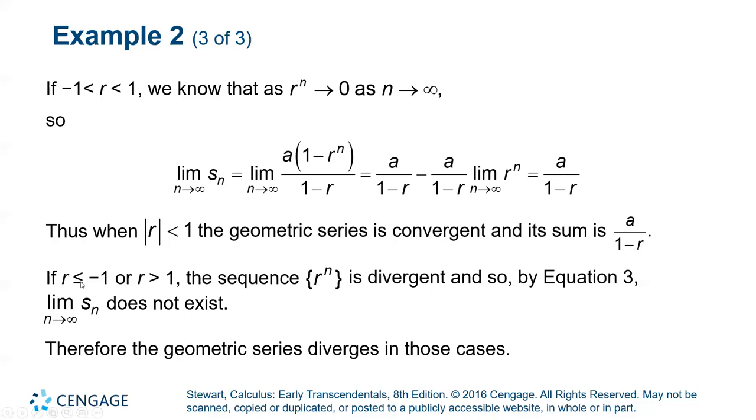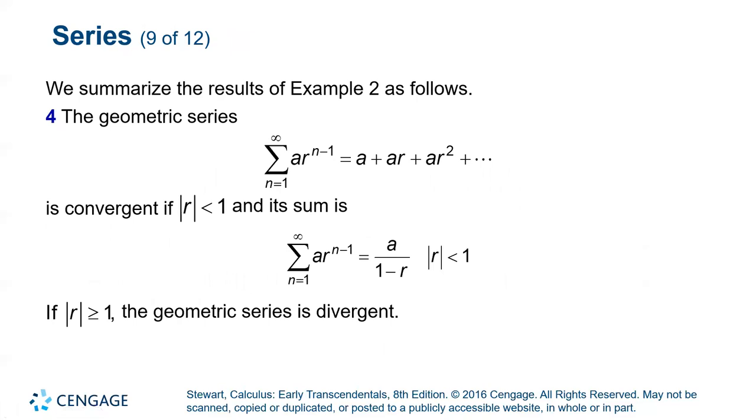If r is less than or equal to negative 1 or greater than positive 1, the sequence itself is divergent and thus the limit of the partial sums does not exist. And thus the geometric series diverges in the cases where r is less than or equal to negative 1 or greater than 1. To summarize these results, if we start with this geometric series, that series is convergent if r is between negative 1 and 1, but anywhere else it's divergent.